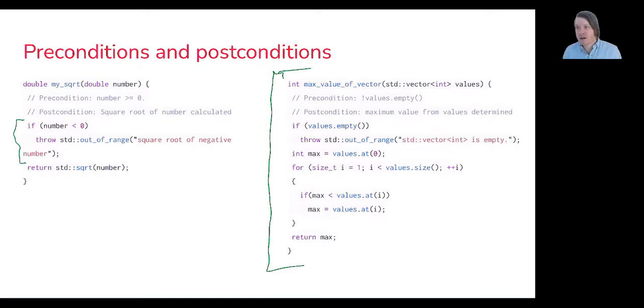something that we could actually compute a maximum value for. The postcondition would be that the maximum value from values, in this case the standard library vector, is determined. So we can start and say,